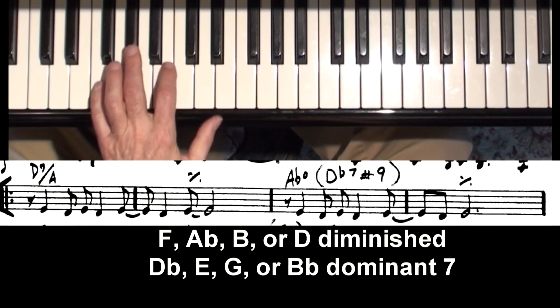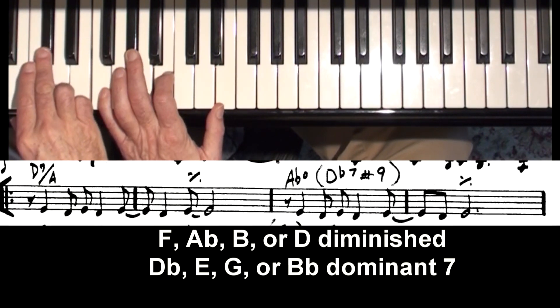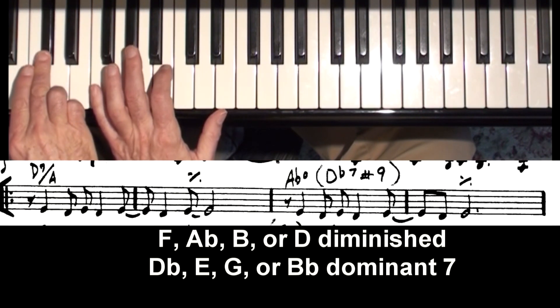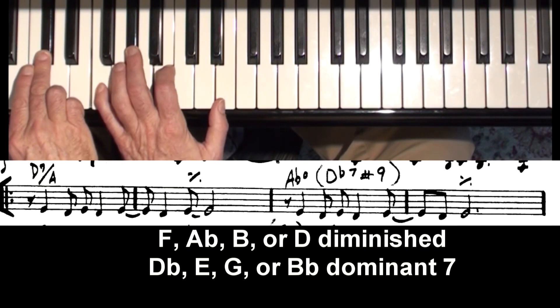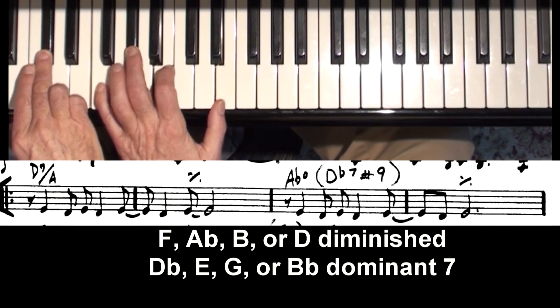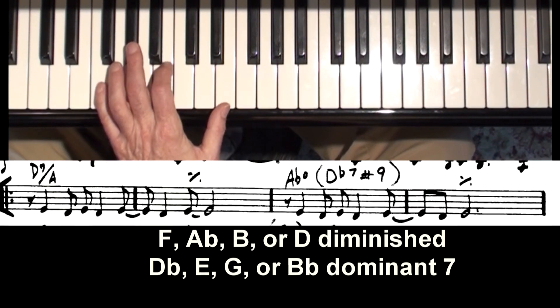This shape could be used like for eight different chords. All four different diminished chords and four different dominant 7th chords. Now, in the chart here, it says A-flat diminished. That's a whole tone extension above one of the notes. However, I hear the bass player playing this. So it could be this dominant 7th chord, D-flat dominant 7th, with a sharp 9. So, whatever you're using it, that's a great rootless voicing.